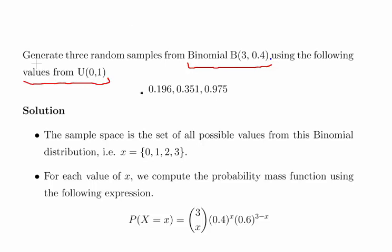We've run a uniform random number generator and generated these three numbers: 0.196, 0.351, and 0.975. The uniform random number generator process is fairly straightforward, but it's to show how you would create a plausible binomial distribution with the correct distribution for n equals 3 and p equals 0.4.